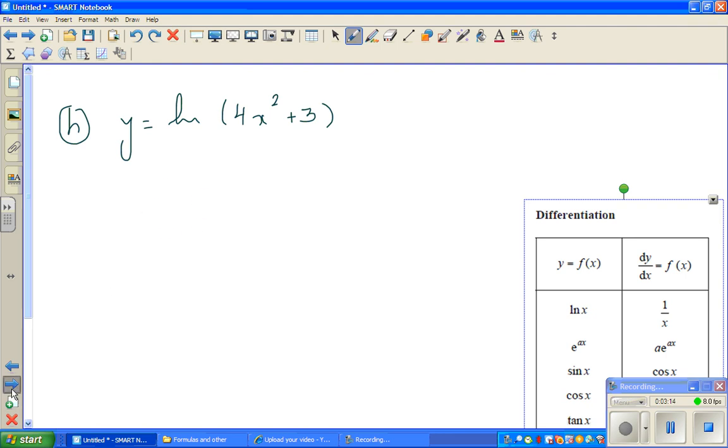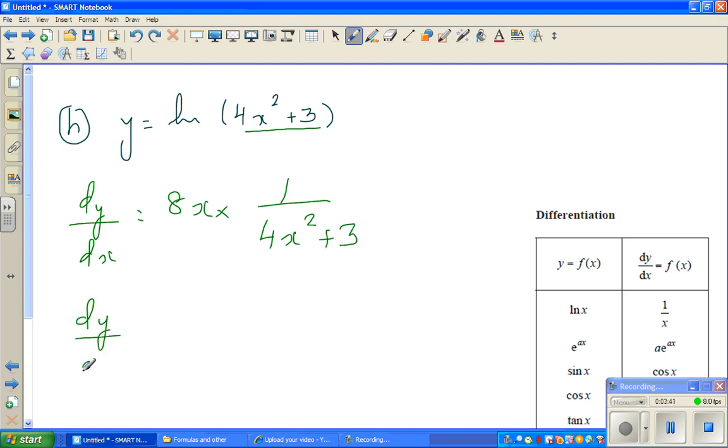This is I think the last. So this is again differentiating the inside. So dy by dx is equal to, this differentiates to 8x. The differentiation of natural logarithm is 1 over x times 1 over 4x squared plus 3. In the last example, I'll show you how to check this. So this is 8x over 4x squared plus 3.